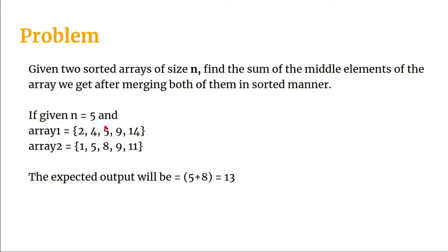An important thing to notice is that whatever the value of n, if we merge two arrays of the same size, the size of the merged array will always be even. So we cannot get a single median — we will have two medians, one at position n/2 and another at n/2 + 1. That is why we use the sum of medians concept here.